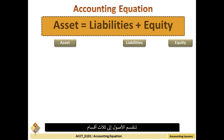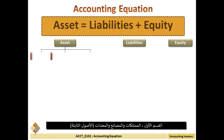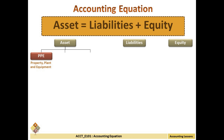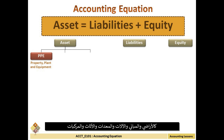Assets are divided into three sections. The first section is PPE, which is Property, Plant, and Equipment. PPE are long-term assets vital to a business's operations and not easily converted into cash. They are tangible assets, meaning they are physical in nature or can be touched. Examples include land, buildings, machinery, equipment, furniture, and vehicles.